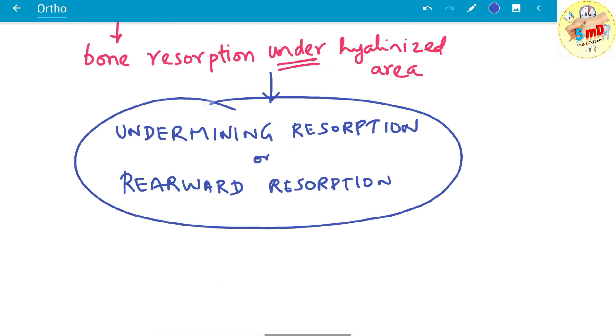So what are the features of this undermining resorption? It does not happen in the socket wall adjacent to the periodontal ligament—that is no periosteal bone resorption—but it occurs in the bone marrow space, which is behind the periodontal ligament.